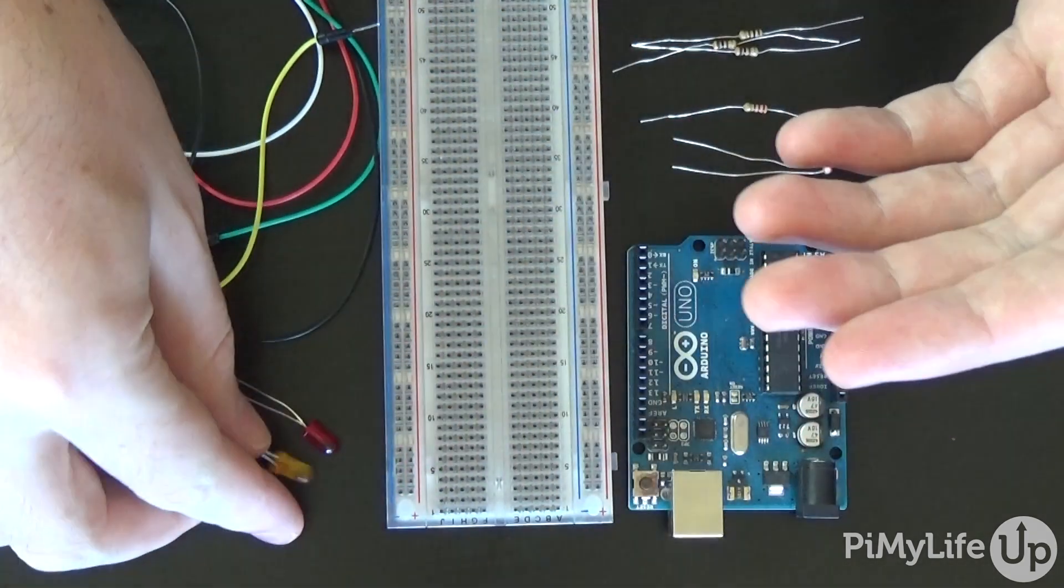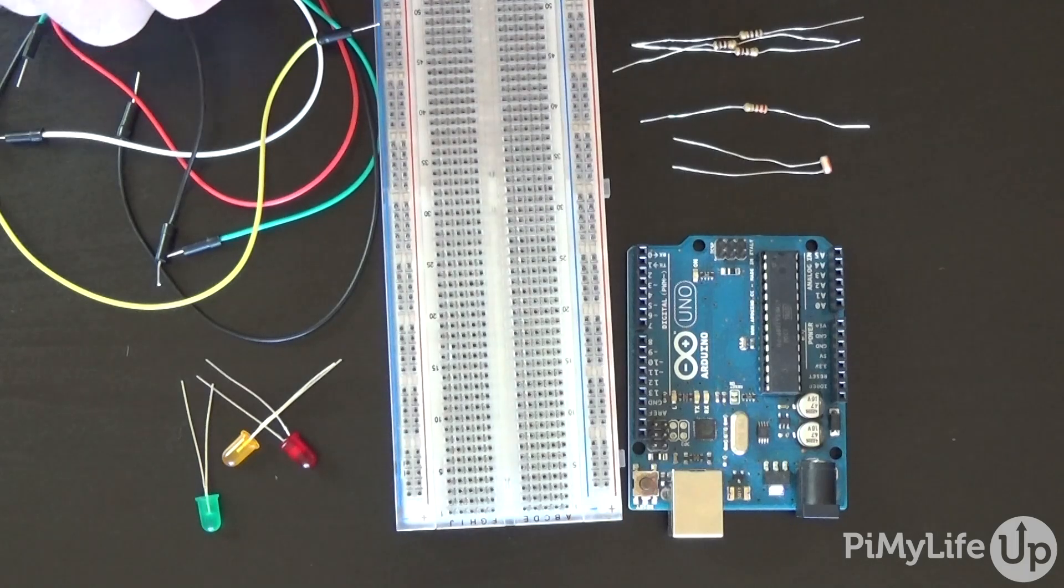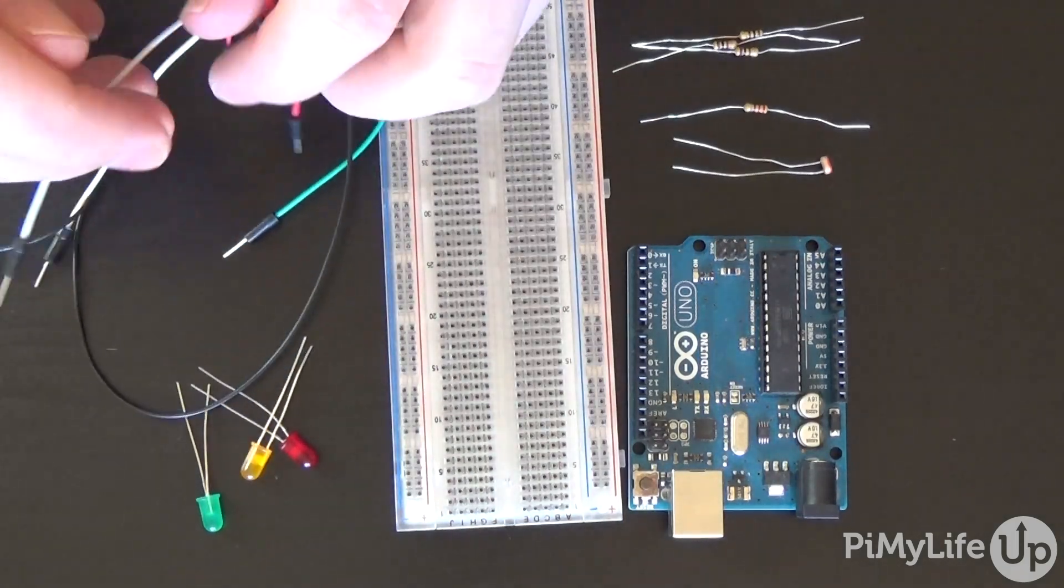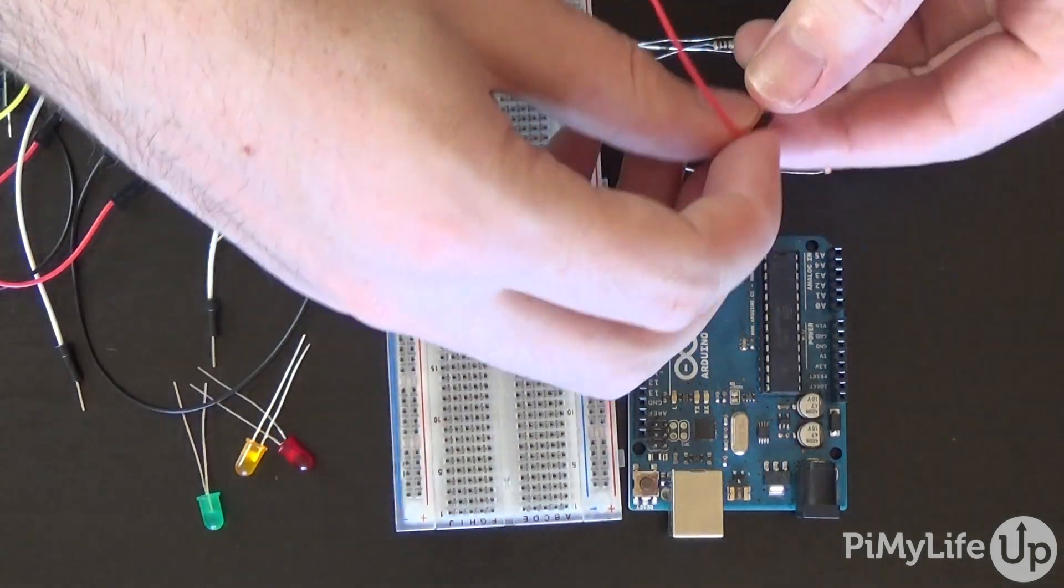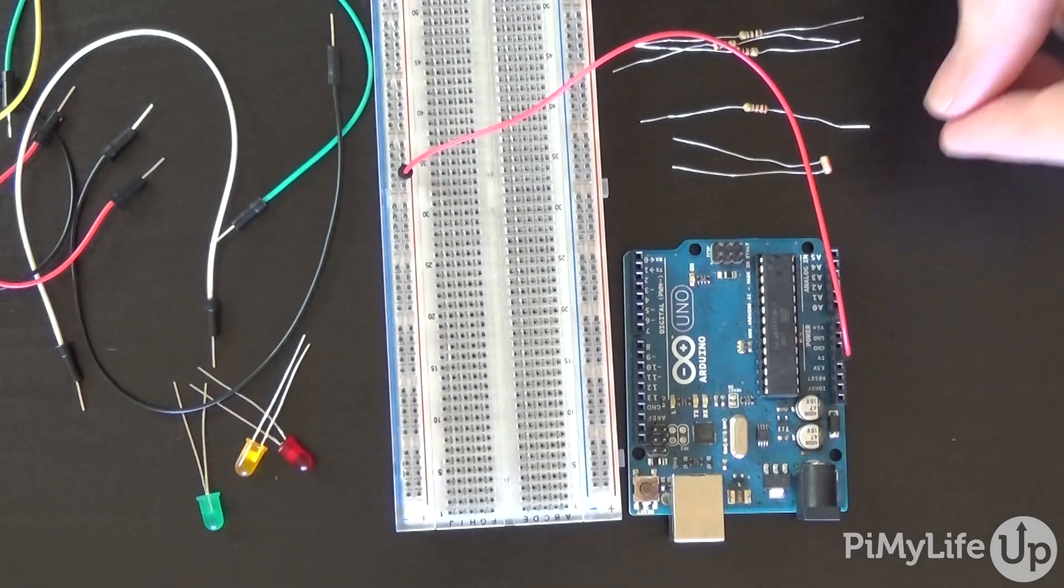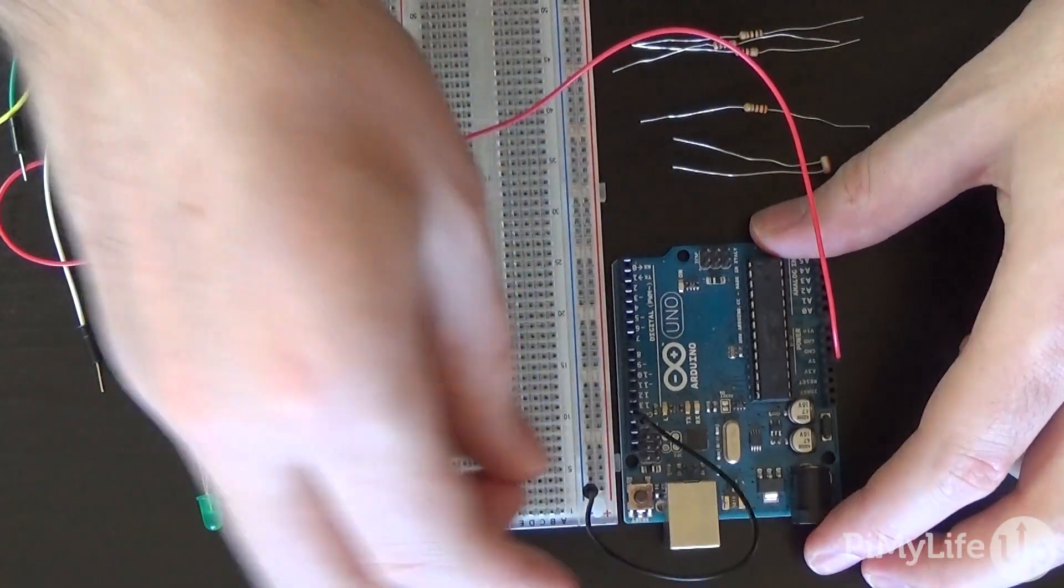First, hook the five volt wire up from the Arduino to the positive rail on the breadboard. Next, hook the ground pin to the ground rail on the breadboard.